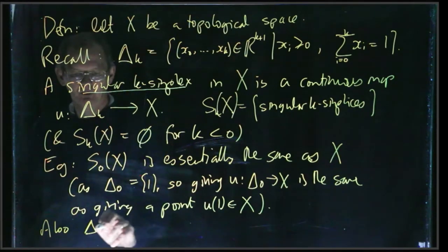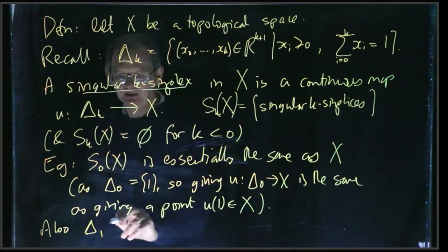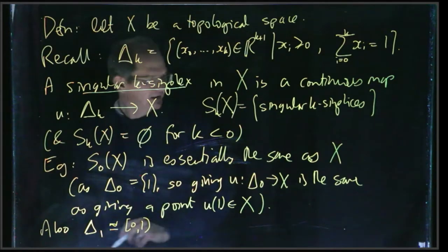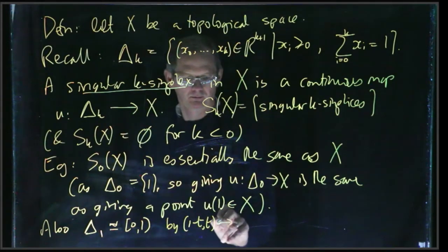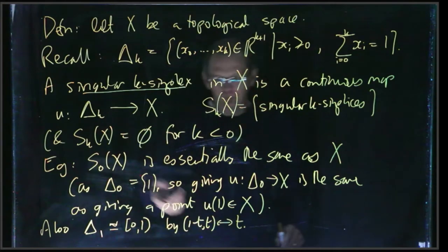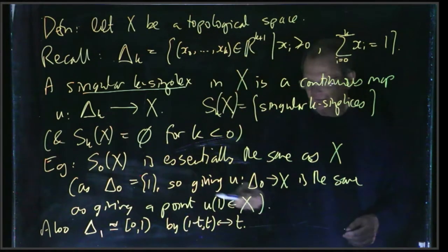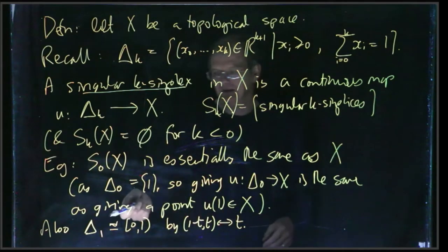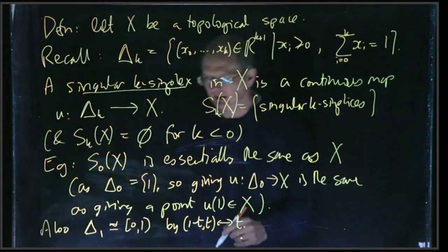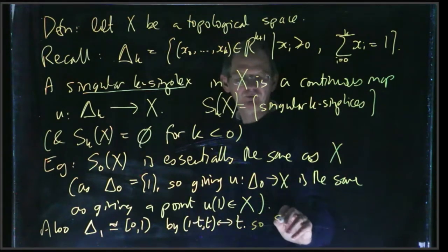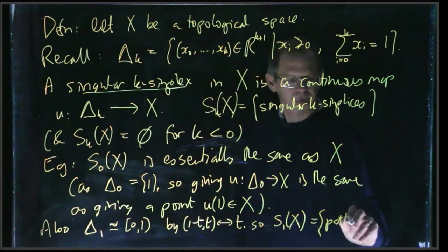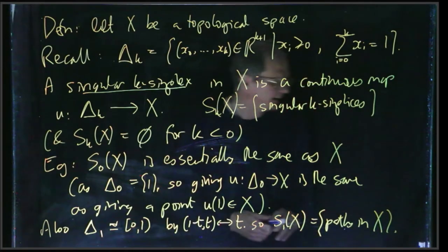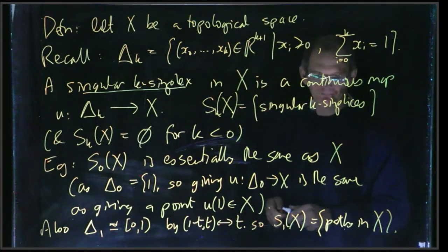So S₀(X) is essentially the same as X. And then, what about Δ₁? Well, Δ₁ is, we can identify it with the unit interval [0,1]. So a point in Δ₁ has the form (1-t, t) for some t in the unit interval, and it just corresponds to t, so we can think of a 1-simplex as just a unit interval. So S₁(X) is essentially the set of paths in X. 0-simplex is just a point, 1-simplex is just a path.